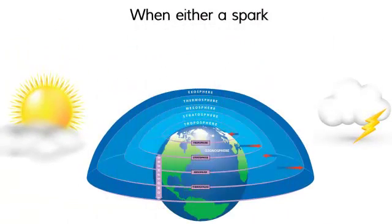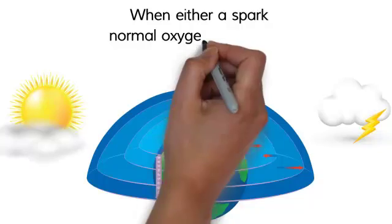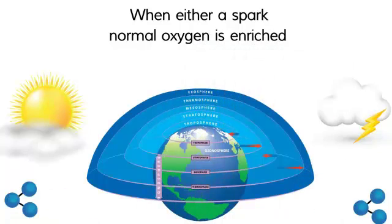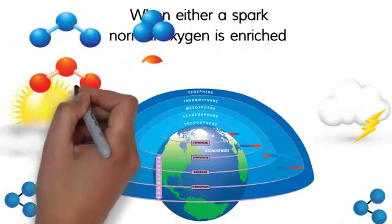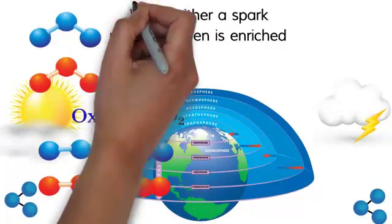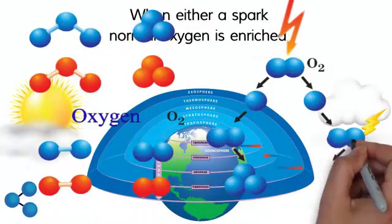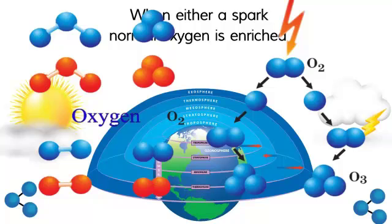Now, when either a spark, like a lightning bolt, happens, normal oxygen is enriched, making ozone. This happens when the normal two oxygen atoms suddenly collect a third oxygen atom to make O3. That is ozone, just another form of oxygen.